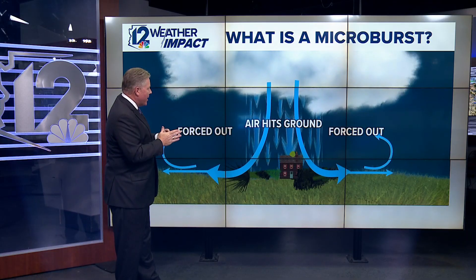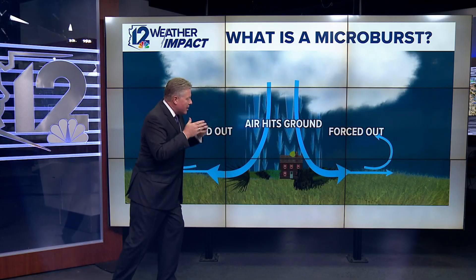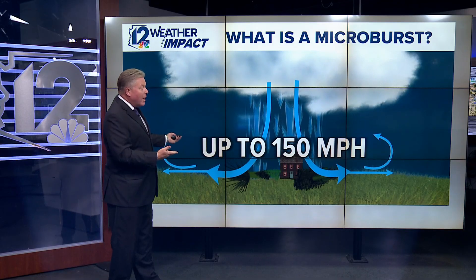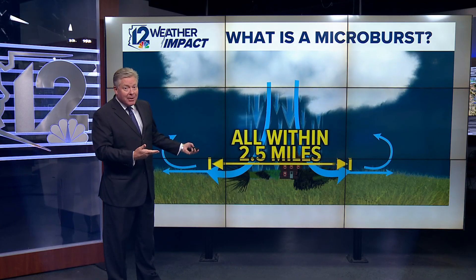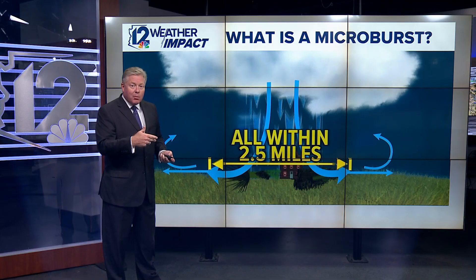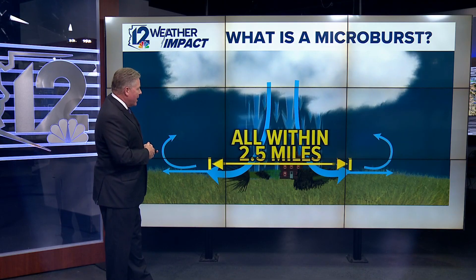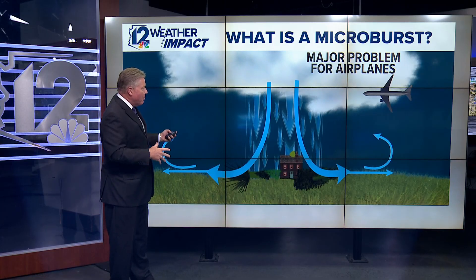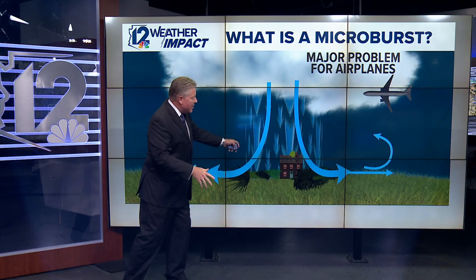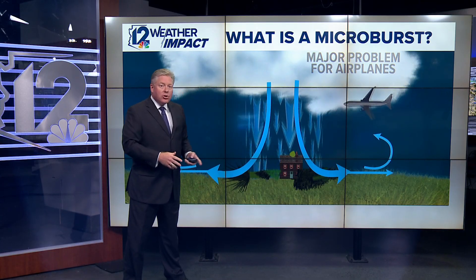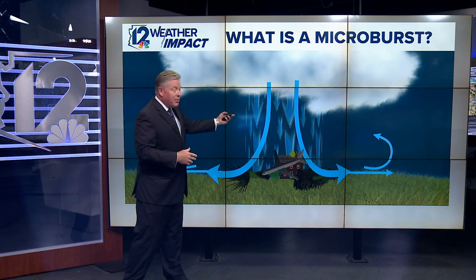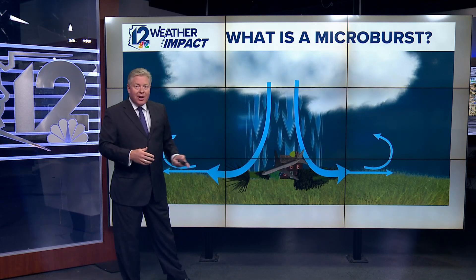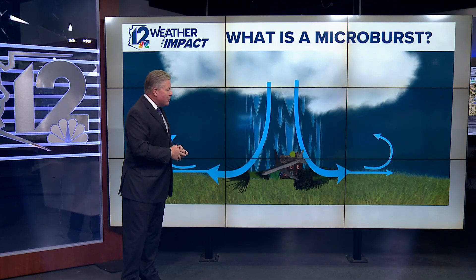It's a relatively small area. As that air hits the ground, it's forced outward and it comes down with great force — up to 150 miles per hour in some cases. In Tempe, we had a report of a 71-mile-per-hour wind gust. This all happens within about 2½ miles, a relatively small area, and it can flatten trees and damage buildings. Also a major hazard for airplanes, because if an airplane tries to fly through that, it's not going to fly. There have been a number of major aviation accidents attributed to microburst winds.